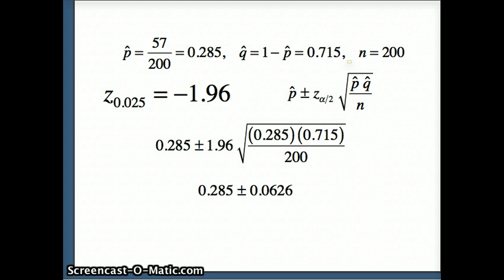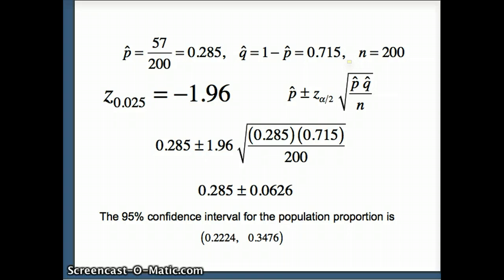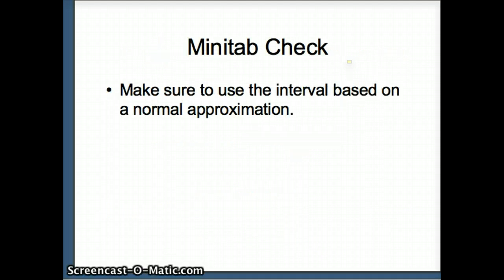So there are the numbers. Doing some computation we get 0.285 plus or minus 0.0626, so our 95% confidence interval for the population proportion is indeed from 0.2224 to 0.3476. Next I want to use Minitab to check the results.